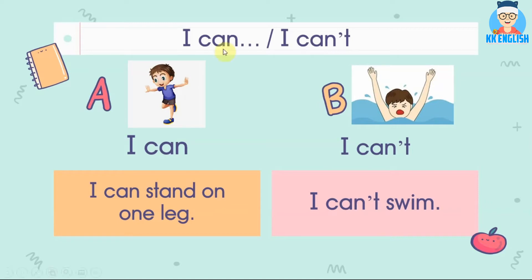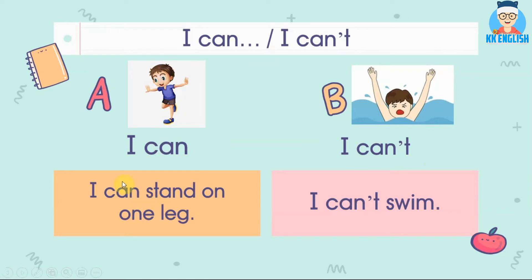I can, I can't — what is 'I can'? I can 是我可以、我能。I can't 是我不可以、我不能。Let's check out the sentence.